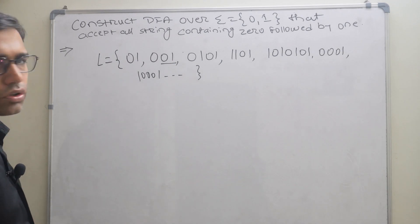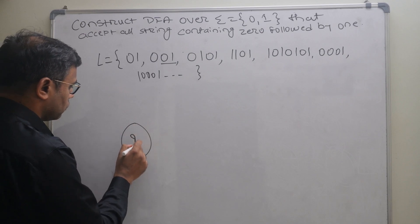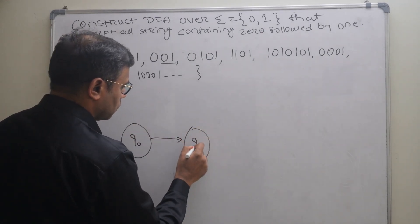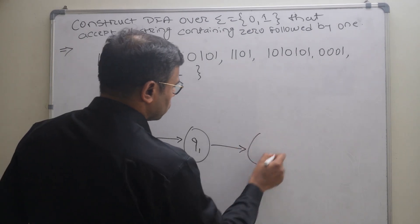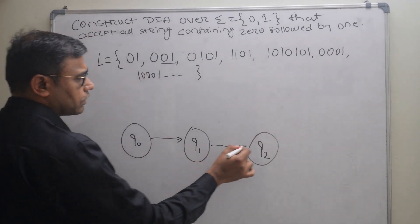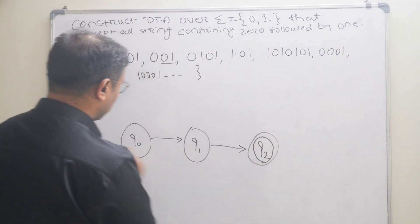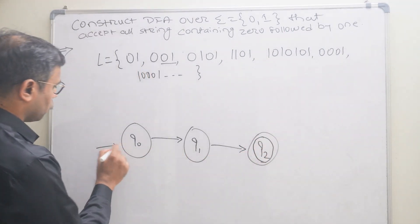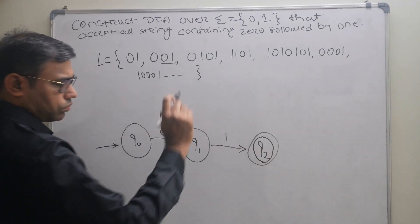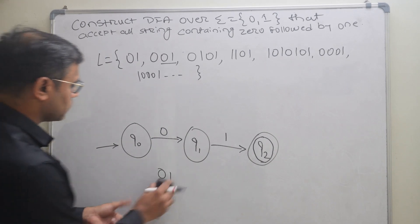We know the number of states, so I will draw the states here: q0, then q1, then q2. Definitely q2 will be the final state because it will accept zero-one. For the first string zero-one, we go from q0 on zero to q1, then on one to q2. So q2 is the final state.